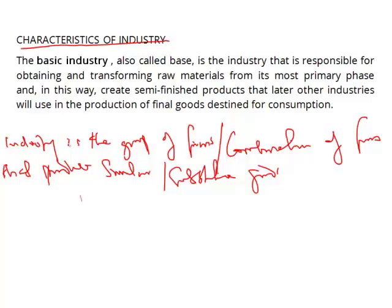For the purpose of this course we look at basic industries. Basic industries are responsible for obtaining and transforming raw materials from their most primary phase, creating semi-finished goods that other industries later use in production of final goods. Generally, these are heavy industries since they consume very large quantities of raw materials and usually require very high capital investment.